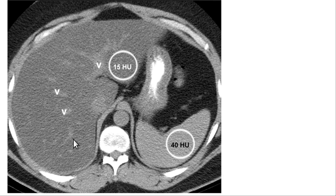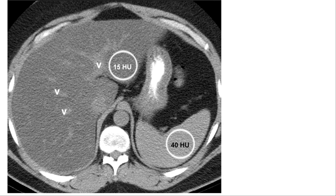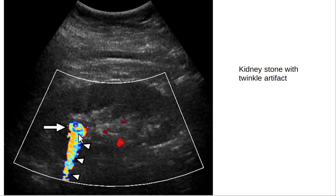Here's what a fatty liver looks like on CT scan. On CT we use density measured in Hounsfield units (HU), named after Sir Geoffrey Hounsfield who co-invented the CT scanner. You can see the liver at 15 HU compared to the spleen at 40 HU — the spleen is denser and appears whiter. The liver being hypodense relative to the spleen is consistent with fatty liver, and this is typical in kidney stone patients.